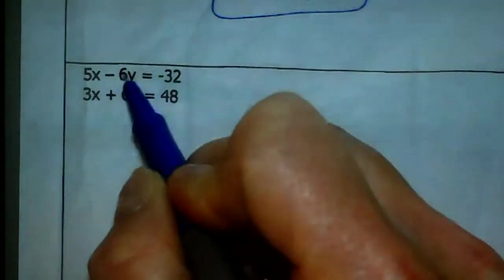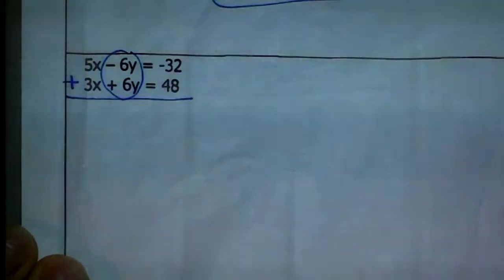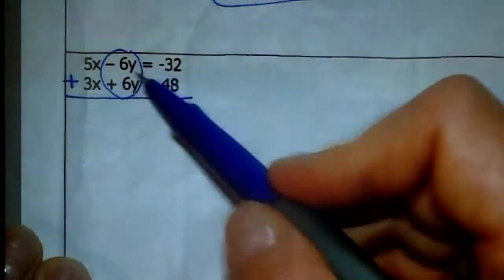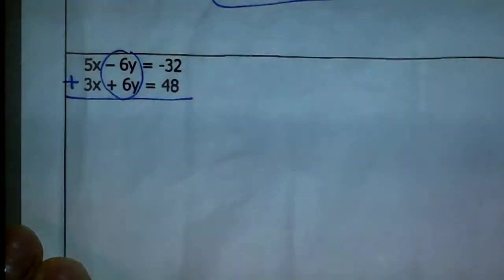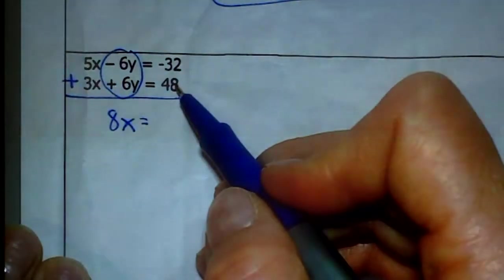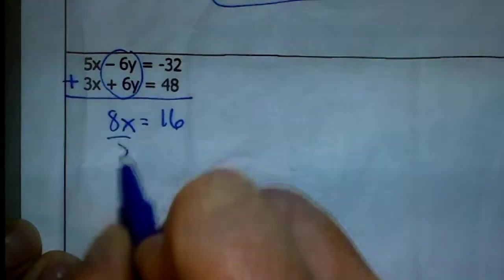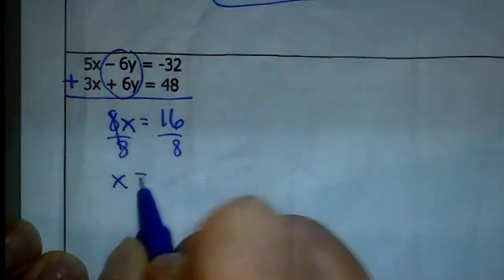Another example in this set: both equations are in Ax plus By equals C form, and I have opposite coefficients — same digit, opposite sign. That means I'll use elimination and add them together. The Y's are being eliminated because those have the opposite coefficients. 5X plus 3X equals 8X. Negative 32 plus positive 48 gives you 16, so 8X equals 16. Divide each side by 8 and X equals 2.